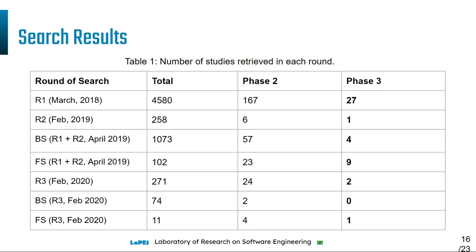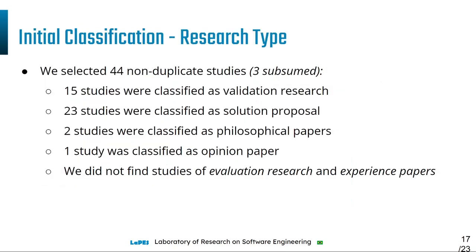Here we have the table with the results of phases two and three of the selection. In the final set, there were 44 studies, three of which were subsumed. Regarding research type, 15 studies were classified as validation research, 23 as solution proposal, two as philosophical papers, one as opinion paper, and we did not find evaluation research or experience report papers.